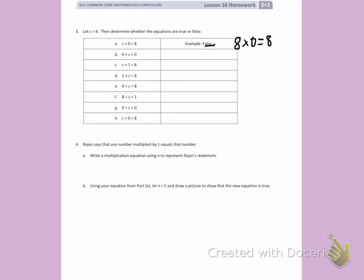Letter B, 0 times C equals 0. So that's telling me 0 times 8 equals 0. Anything times 0 equals 0, so this is true.